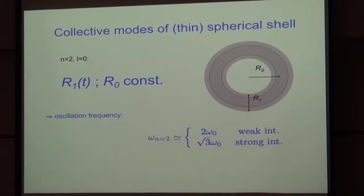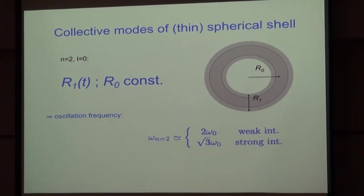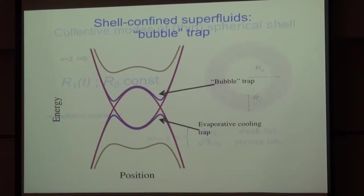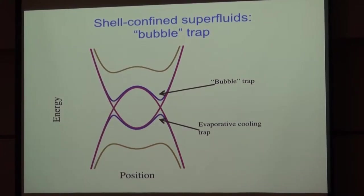I think this is a cool idea to make a hollow sphere and ask yourself how it is different. The question is: can you actually make a hollow sphere? Can you trap BECs in this shape? There is a way to do it. It's called a bubble trap.